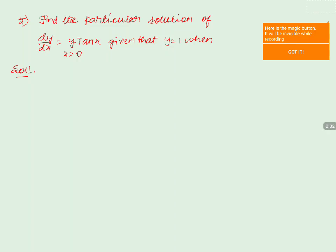Find the particular solution of dy/dx = y·tan(x), given that y = 1 when x = 0. Here we need to calculate the value of c, the constant, because the problem asks for the particular solution.